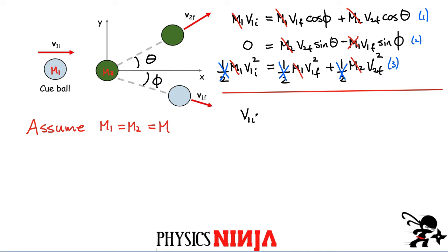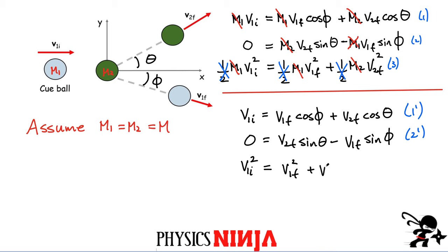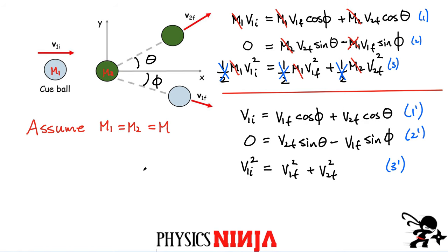After simplification, the equations become: equation 1′: v1 initial = v1 final cos(phi) + v2 final cos(theta). Equation 2′: v2 final sin(theta) − v1 final sin(phi) = 0. Equation 3′ (kinetic energy): v1 initial squared = v1 final squared + v2 final squared. These are our three working equations.